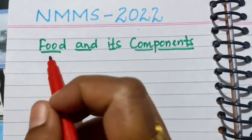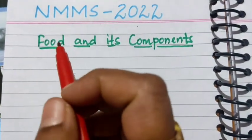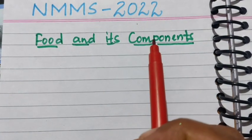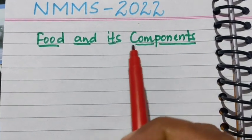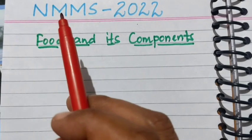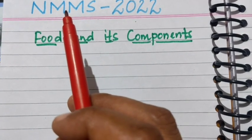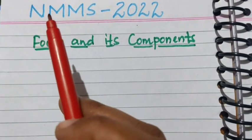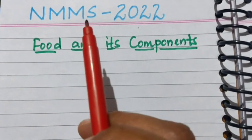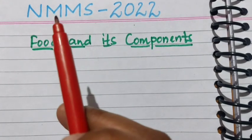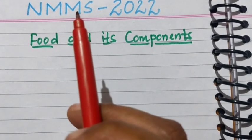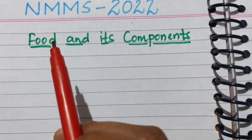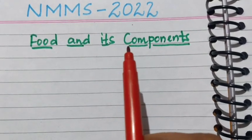Hello students, today we are going to discuss the topic food and its components. As we discussed in the earlier video about the NMMS question paper, the national means cum merit scholarship test will be having physics, chemistry, and biology topics. Under biology, this is the first topic: food and its components.